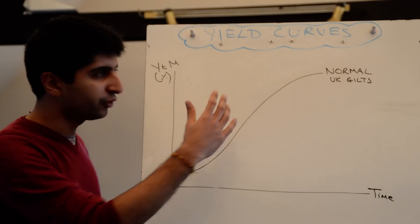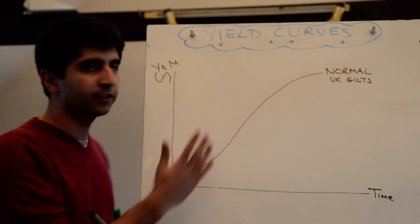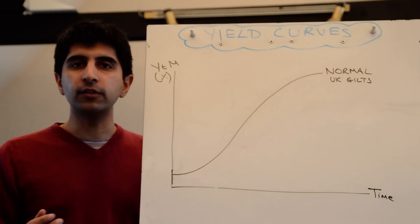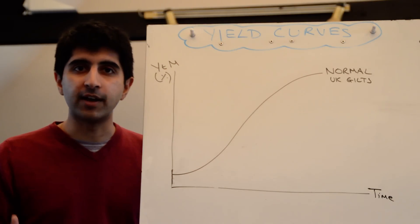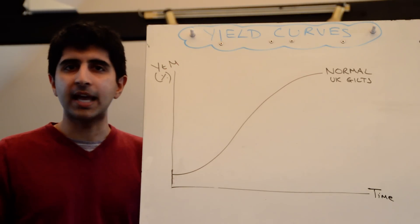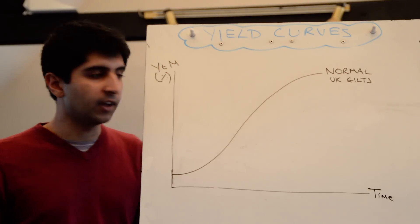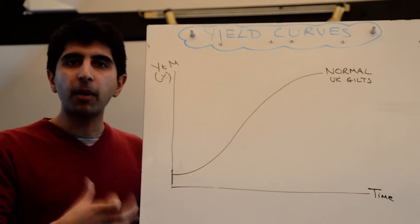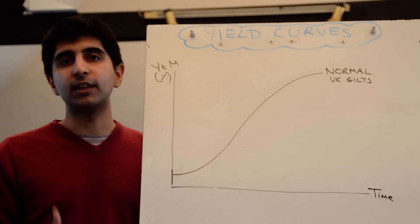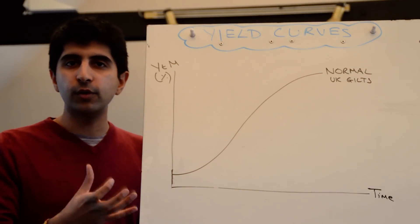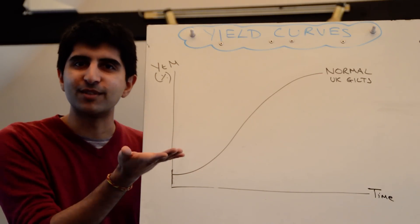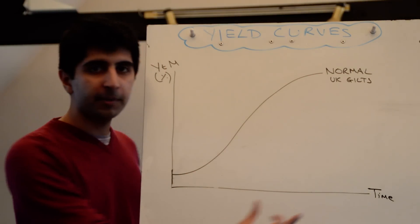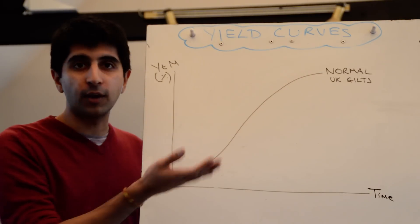Upward sloping — the actual shape can vary, but basically upward sloping. Why is that? There are two reasons. UK government bonds, in terms of maturity dates, can vary. You can buy 1 year, 5 year, 10 year, 20 year, 30 year government bonds. The longer you tie your money up, the more you expect the rate of return to be. The longer you tie your money up, the more you demand a higher yield. So for longer-term government bonds, the greater the yield is going to be.